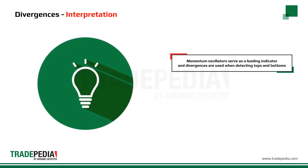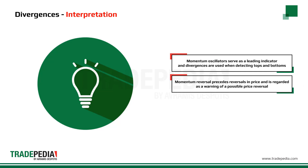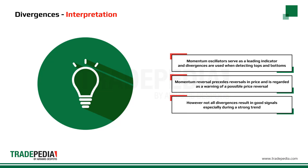Momentum oscillators serve as a leading indicator, and divergences are used when trying to detect market tops and bottoms. Momentum reversal precedes reversals in price, and therefore a shift in momentum is regarded as a warning of a possible price reversal. However, not all divergences result in good signals, especially during a strong trend.